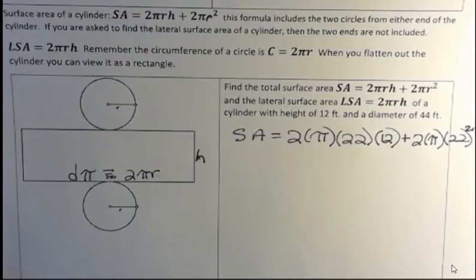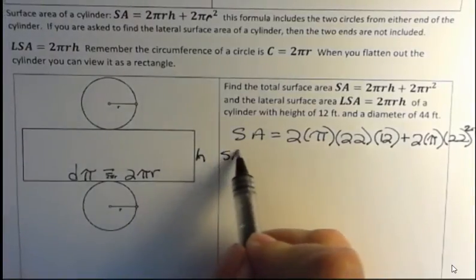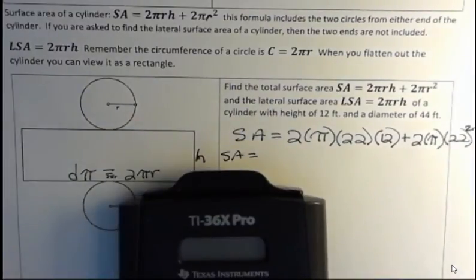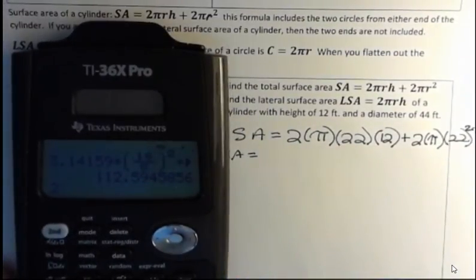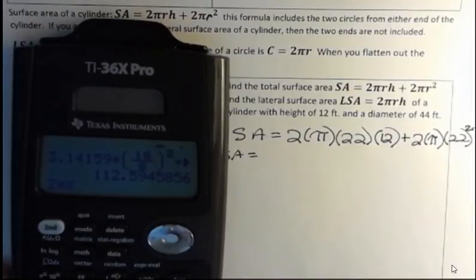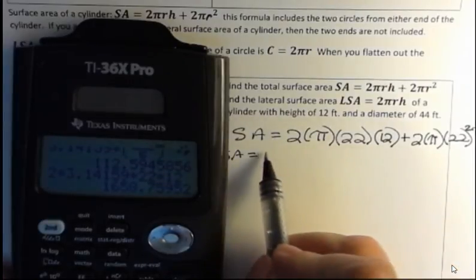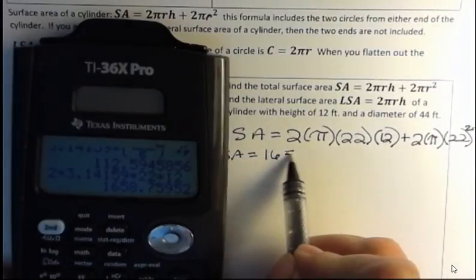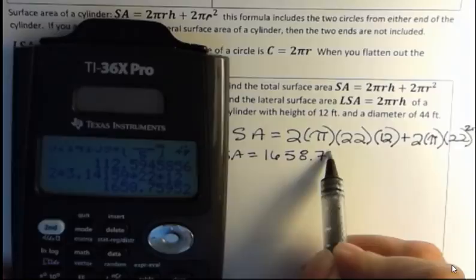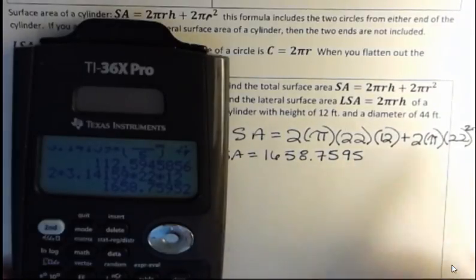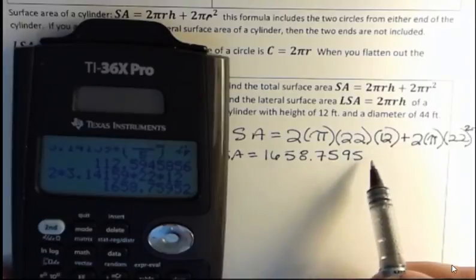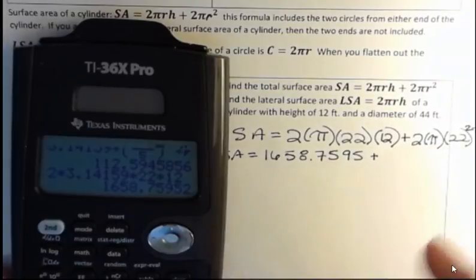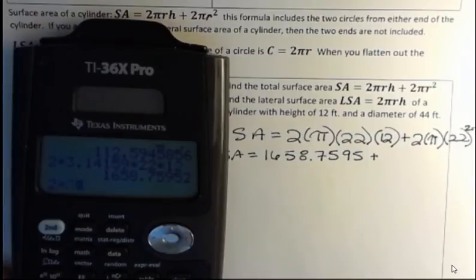So we just have to calculate that. And again, I'm going to use my calculator. The surface area is, and I'm going to use 3.14159 just so we get the decimal in here, 2 times 3.14159 times 22 times 12. And that part is 1,658.7595. I'm not going to round that off yet. I'm going to go, well, I did round it, but I went out four places. And the second part, 2 pi r squared, is 2 times 3.14159 times 22 squared.